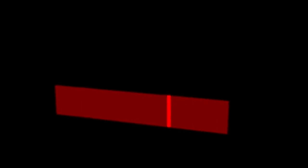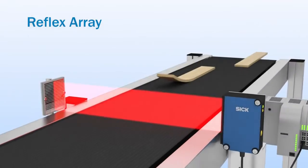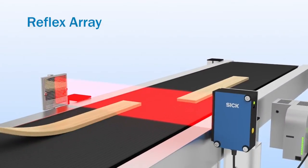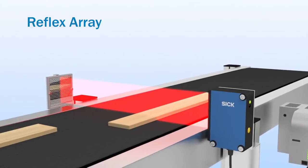The light band of the new reflex array is the answer. Regardless of the position of the object, the reflex array detects everything inside of its light band.